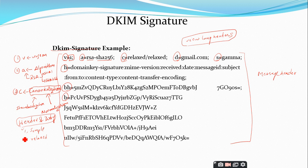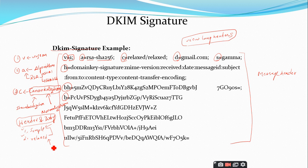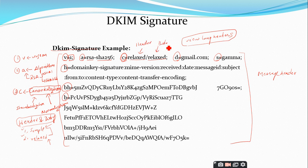Simple canonicalization does not tolerate any modifications — modifications will not be accepted. Relaxed canonicalization, as the name indicates, tolerates or allows common minor modifications. In the example shown, canonicalization is applied as 'relaxed/relaxed' — relaxed applied to both the header and body. So the relaxed algorithm is applied for canonicalization of both header and body.